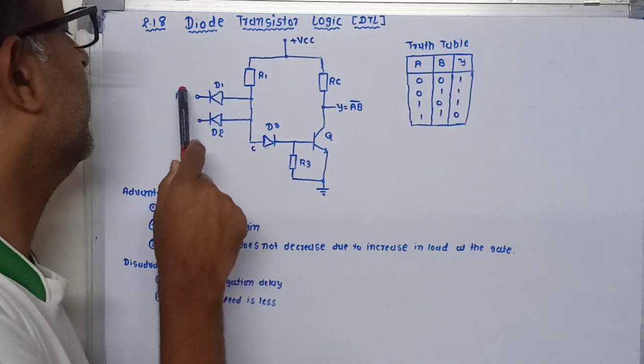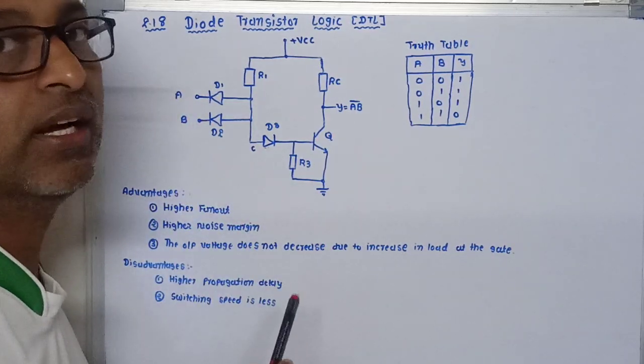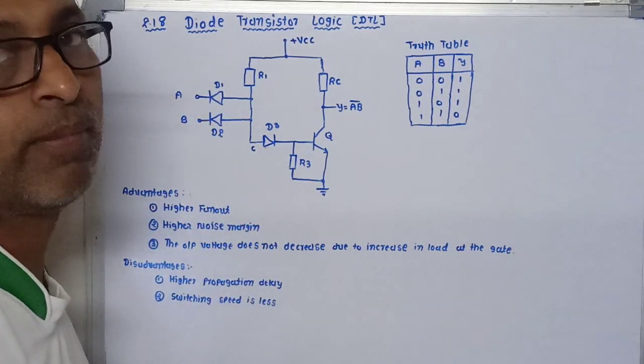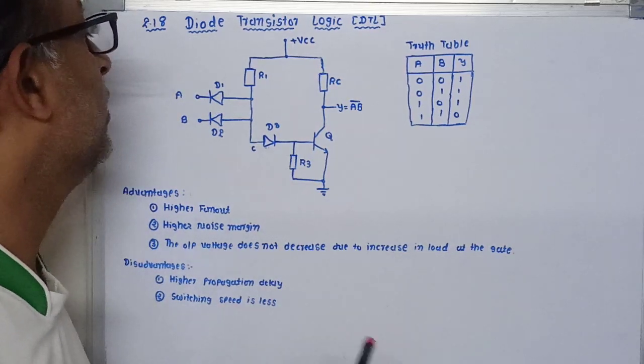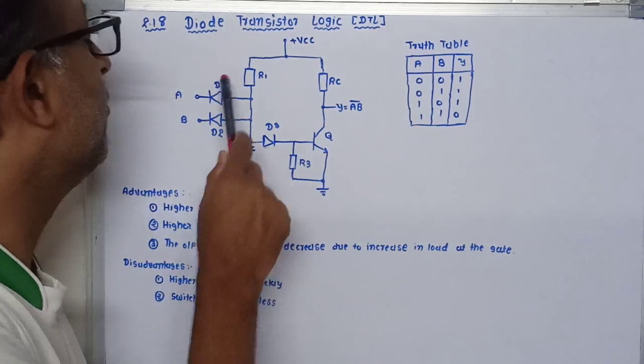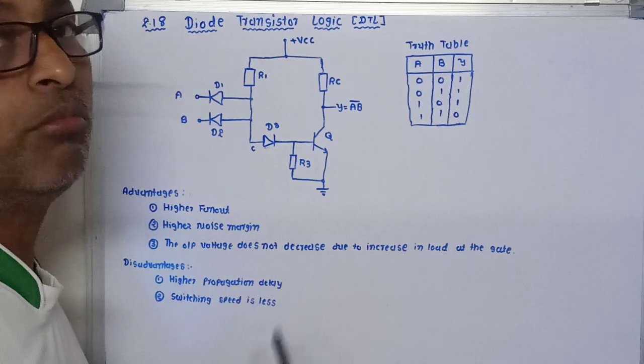When inputs A and B are given at zero level, or you can say ground level, both diodes D1 and D2 are in forward bias.